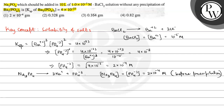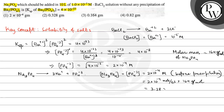So before precipitation, we can add this amount of Na3PO4 to the solution. Now let us express the concentration of Na3PO4 in grams per liter. The molar mass of Na3PO4 is 164 g/mol. So 2×10⁻⁴ mol/L × 164 g/mol = 3.28×10⁻² grams per liter.